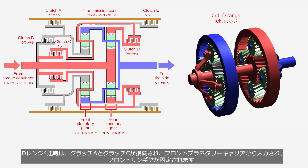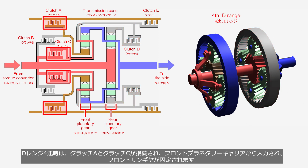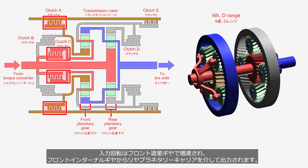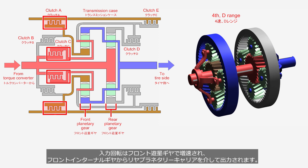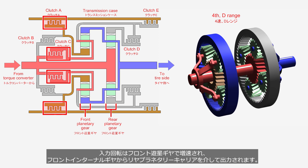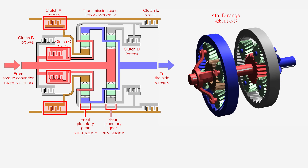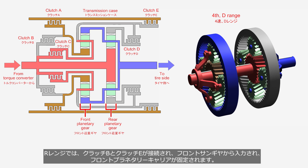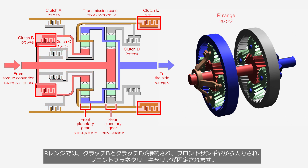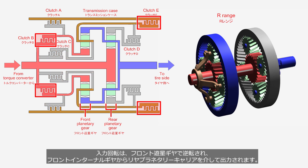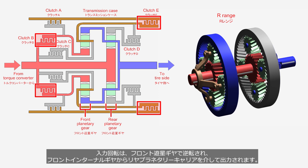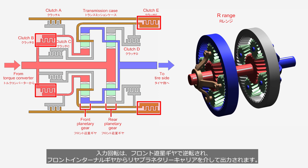In the fourth gear of the D range, clutch A and clutch C are engaged. The rotation inputs to the front planetary carrier and the front sun gear is locked. The input rotation speed is increased at the front planetary gear and then output from the front internal gear through the rear planetary carrier. In the R range, clutch B and clutch E are engaged. The rotation inputs to the front sun gear and the front planetary carrier is locked. The input rotation is reversed by the front planetary gear and then output from the front internal gear through the rear planetary carrier.